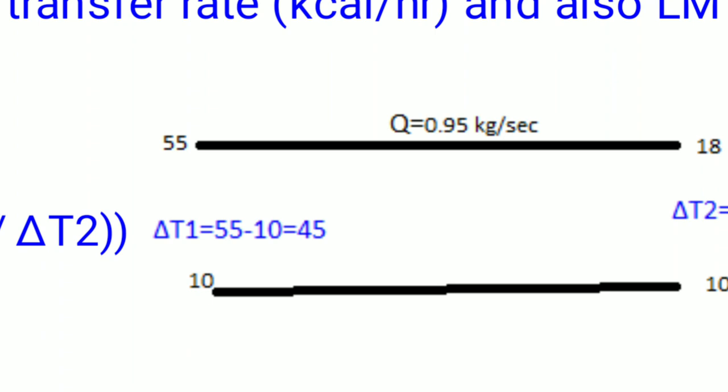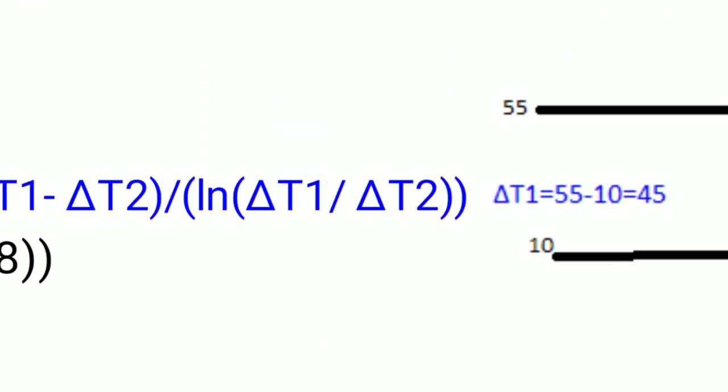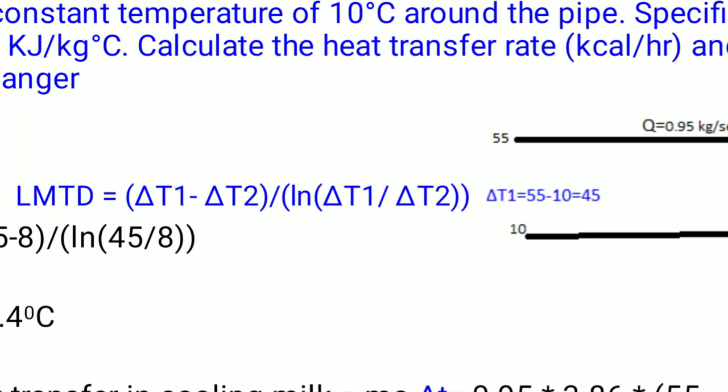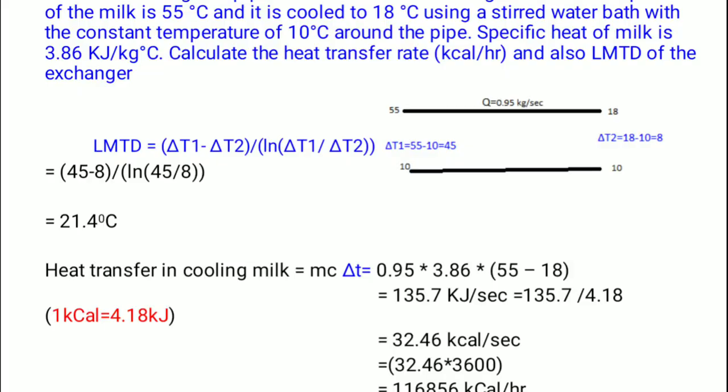Milk enters at 55°C and leaves at 18°C. The water bath is at a constant 10°C at both entrance and exit. So delta T1 = 55 − 10 = 45°C, and delta T2 = 18 − 10 = 8°C. Substituting into the LMTD formula: LMTD = (45 − 8) / ln(45/8) = 21.4°C.